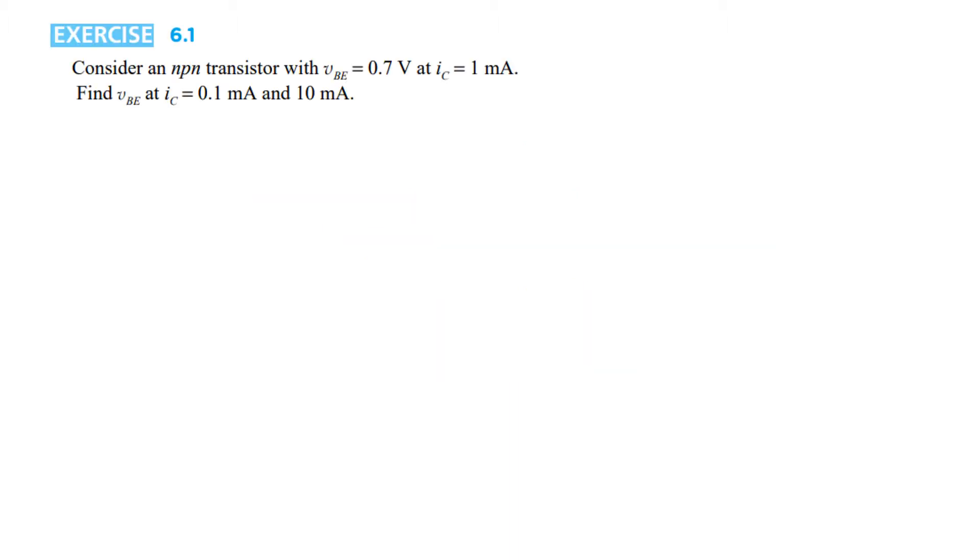Let's start with question number one. Consider an npn transistor with VBE = 0.7 volt and collector current IC = 1 milliampere. We have to find VBE at IC = 0.1 milliampere and IC = 10 milliampere. We take help of this equation: IC = IS e^(VBE/VT).